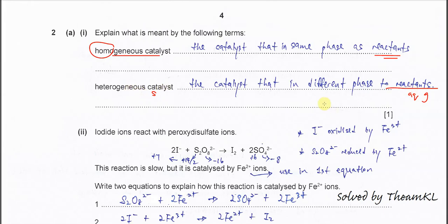The best example is the Haber process. The reactants are all in gas form and the catalyst is solid — it is an iron catalyst.